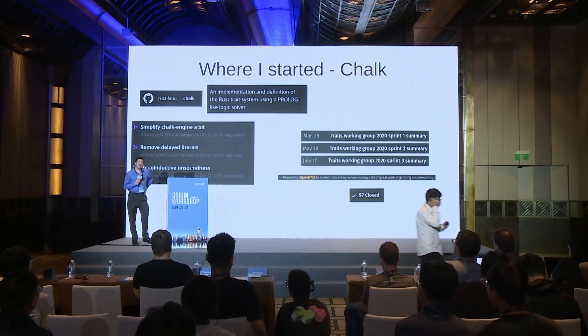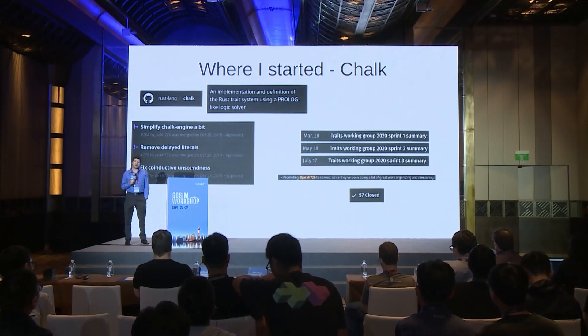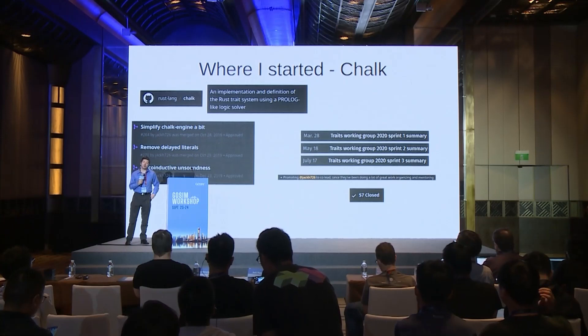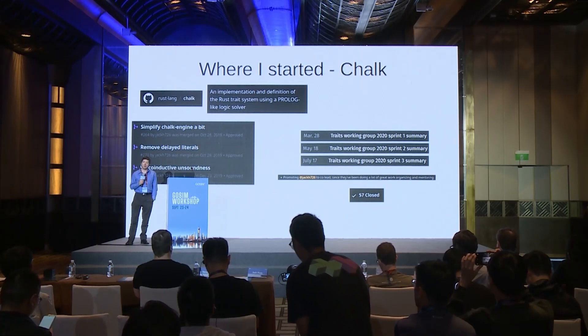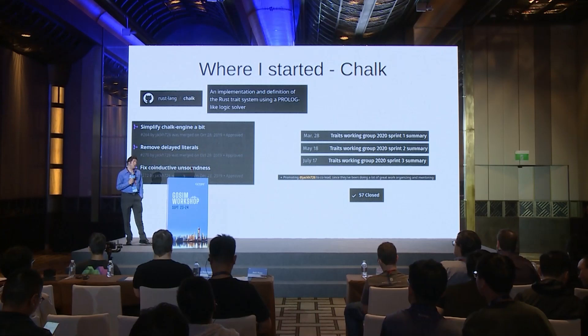Over the course of 2020, particularly the first half, the Traits Working Group, which was in charge of the Chalk repo, made a lot of progress on Chalk itself. We did a number of sprints, and these were published as blog posts. This was really great for getting new contributors in, because a lot of the tasks we had were fairly small. I did a lot of mentorship and ongoing work, and during this time I got promoted to co-lead of the Traits Working Group.